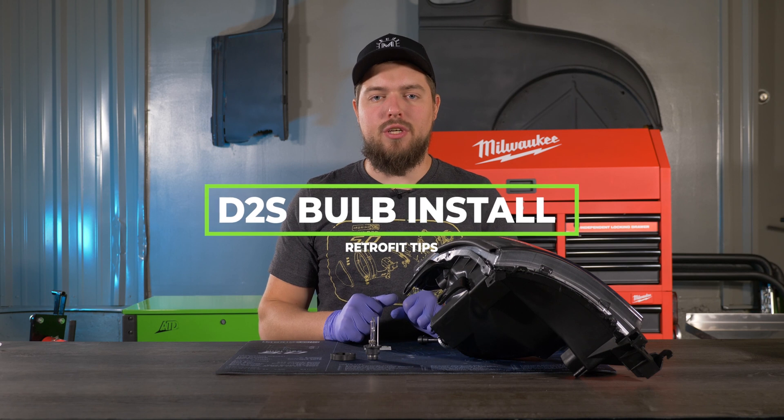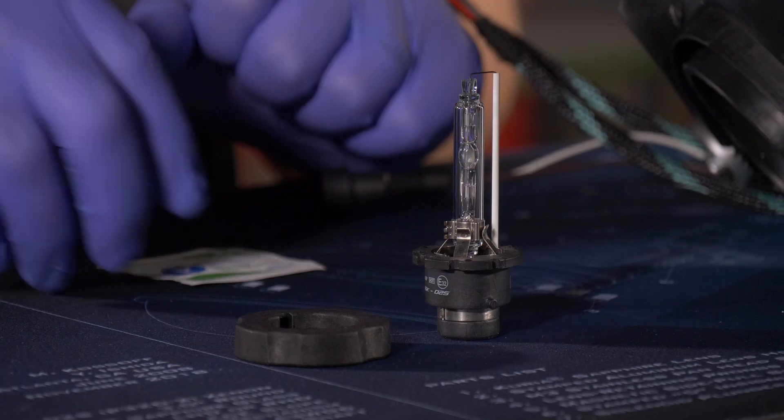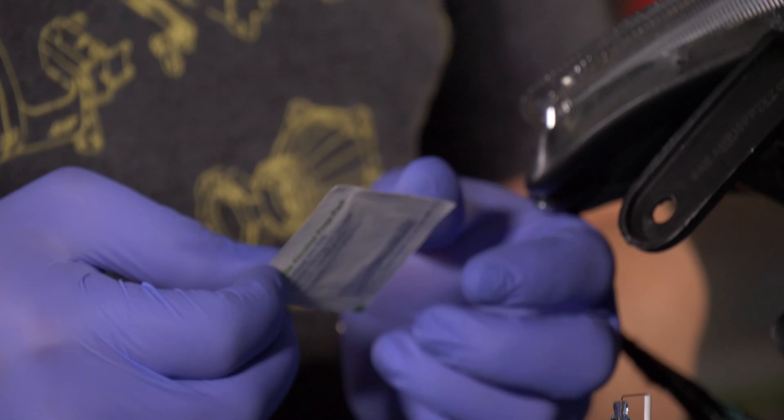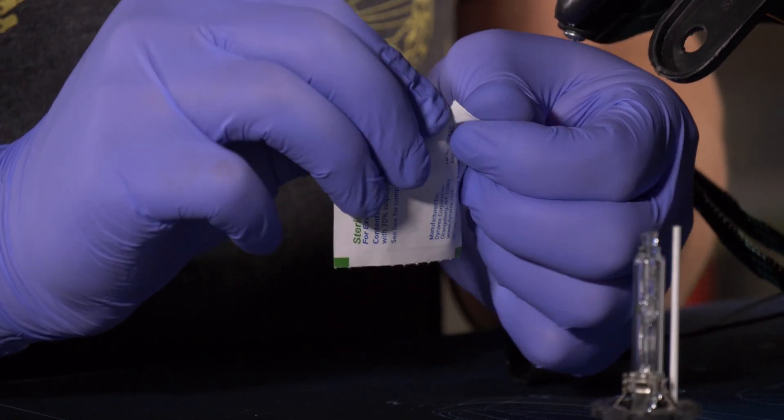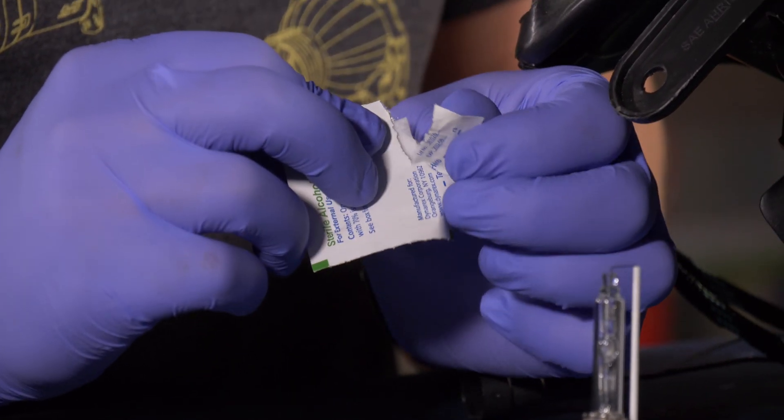Now I'm going to show you how to install your D2S bulbs in your projectors. It's a good idea to grab an alcohol prep pad and wipe down the capsule of the bulb to remove any kind of oils or contaminants.